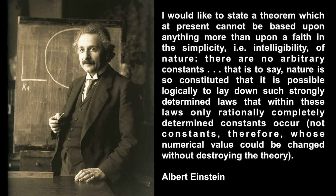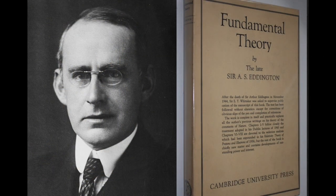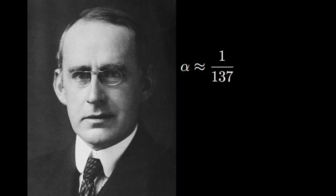Because these numbers are by definition something that the current best theory doesn't predict, if you can come up with a theory that predicts what these numbers are and you get the prediction right, you're necessarily doing better than the best we have. Arthur Eddington in particular spent the last decades of his career trying to understand one particular constant called the fine structure constant. Its value is roughly 1 over 137, and Eddington spent an awful lot of time racking his brain to try and come up with some way in which the number 137 could come out of some deep symmetry, some geometric idea.